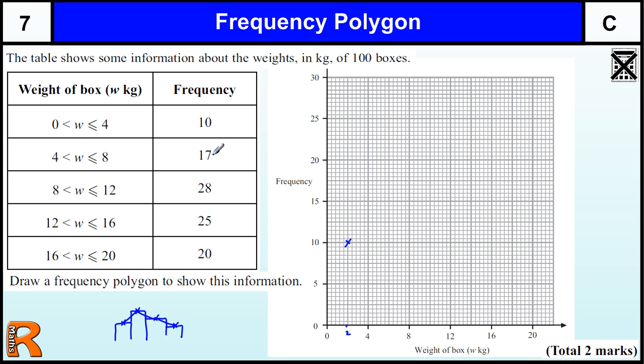The next one we've got is 17, which is between 4 and 8. Being careful to look at our scale, we can see that we've got 10 squares is 5, so every 2 squares is 1. So if we want to plot 17, we have to count up 2 squares, then another 2 squares to there, so that's plotted at 6. And then 8 to 12 is at 10.